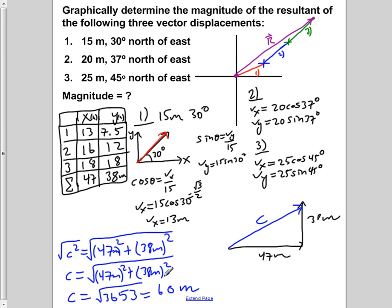So the magnitude of these three vectors added together corresponds to a vector of magnitude 60 meters. The answer for this problem is 60 meters.